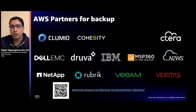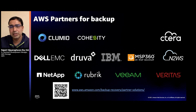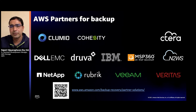AWS has a Partner Network of validated backup partners whose technologies work seamlessly with AWS. Their connectors work with S3 APIs and can back up data across different S3 storage classes. You can visit the Partner Network QR code to find partners you may already be working with.